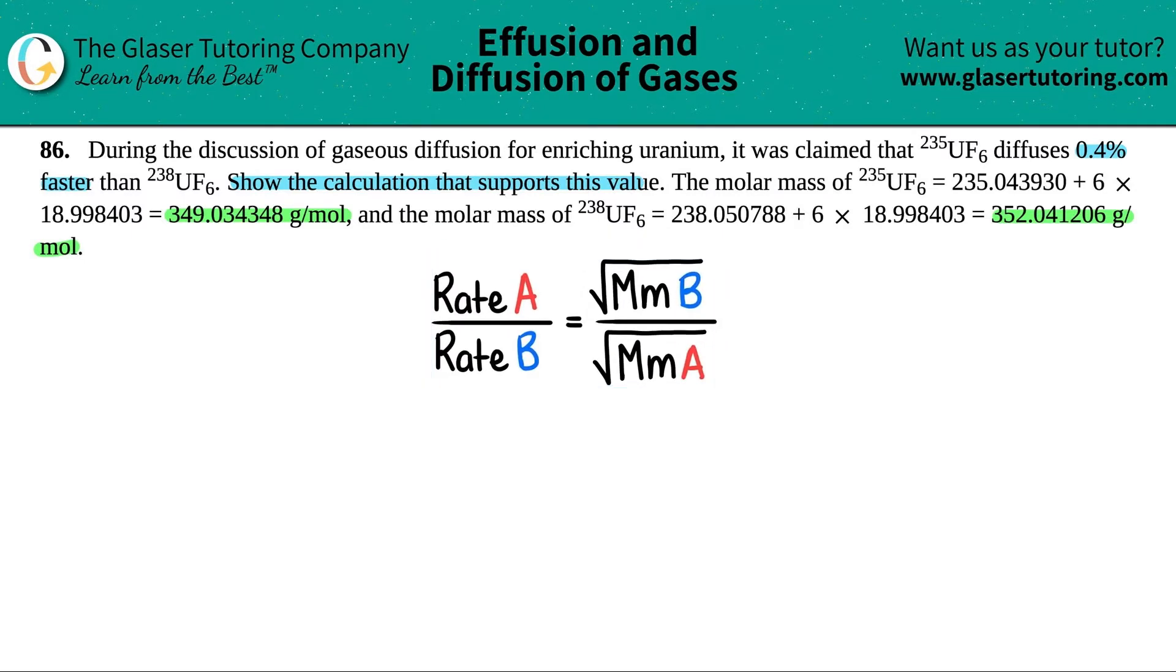The hardest part here is just knowing that when you have your two components, A or B, the information crisscrosses. So whatever you label as A, the information has to crisscross for A and the same thing for B.